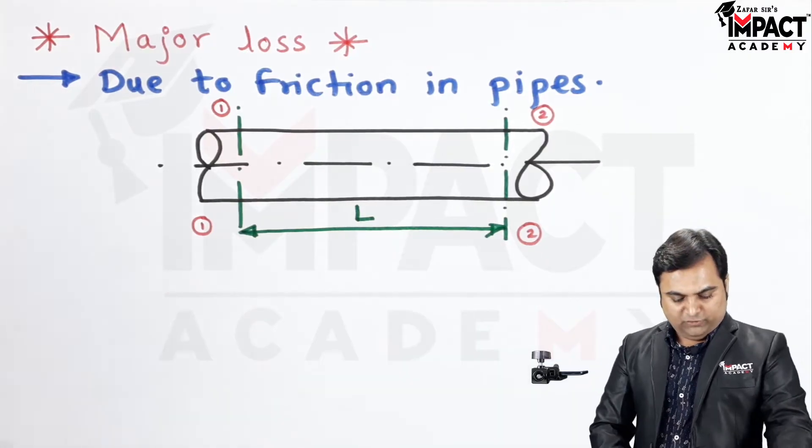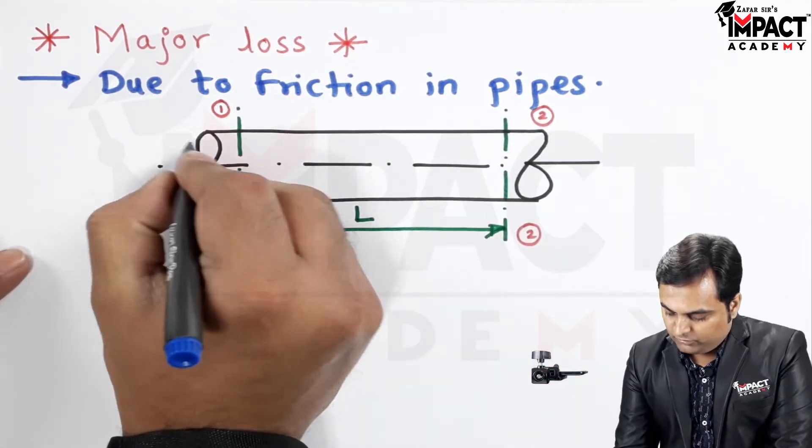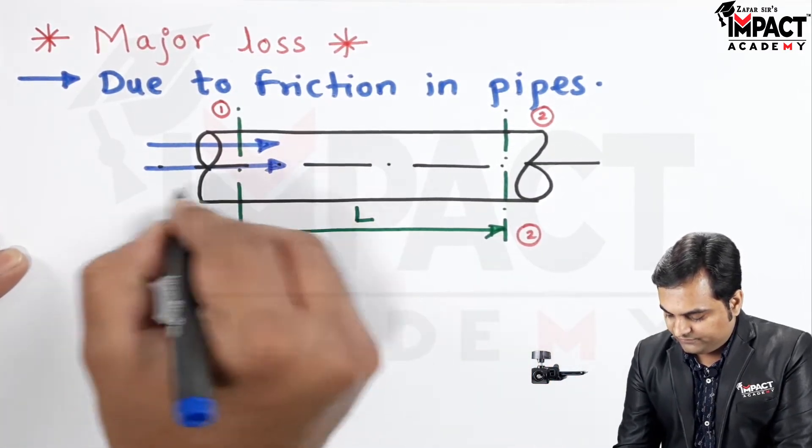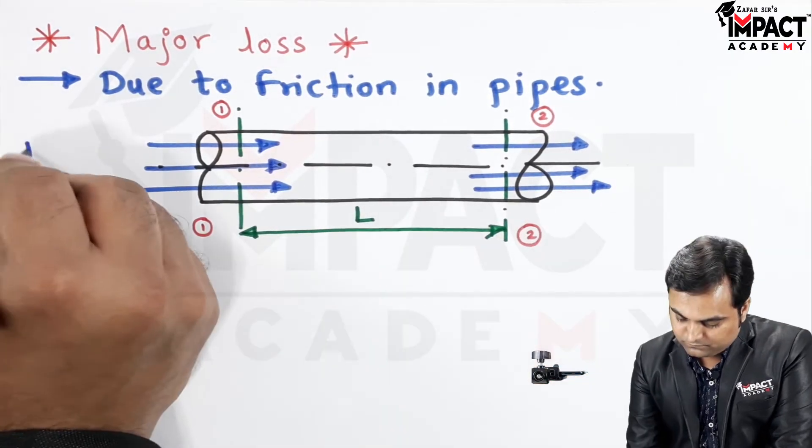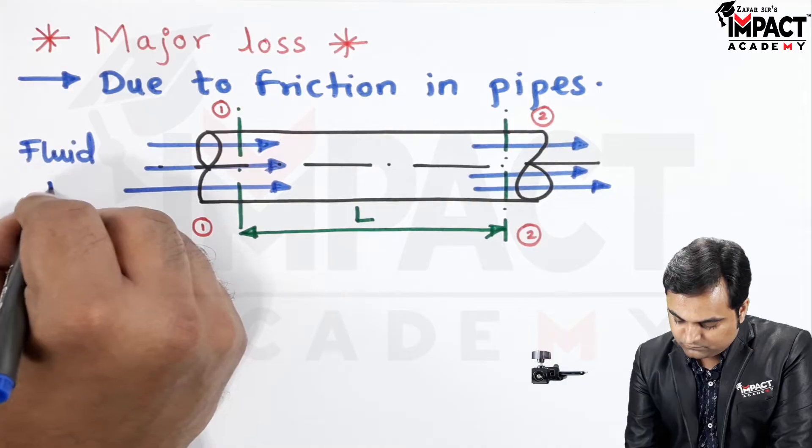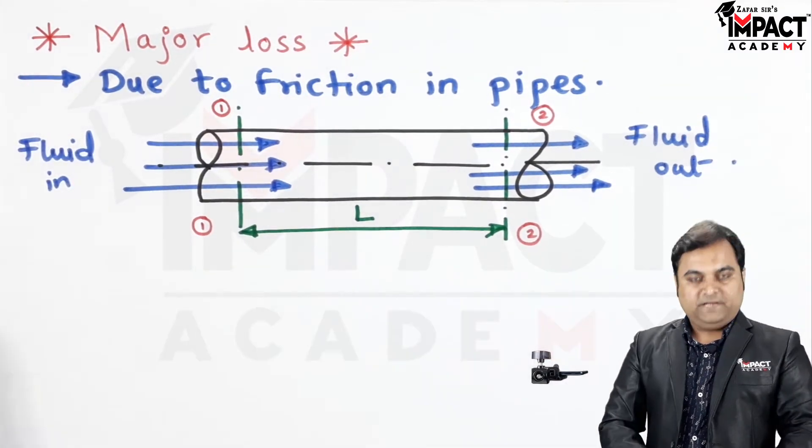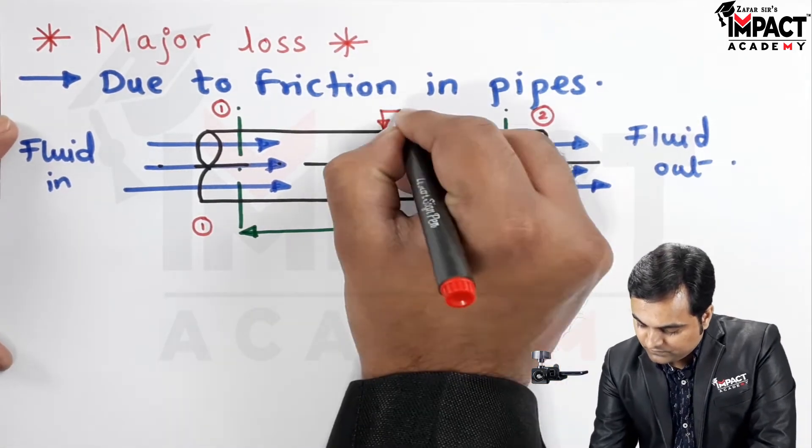It means here I am assuming that the flow is starting from left side, it is towards the right end, from left towards right. This pipeline is having a diameter D.